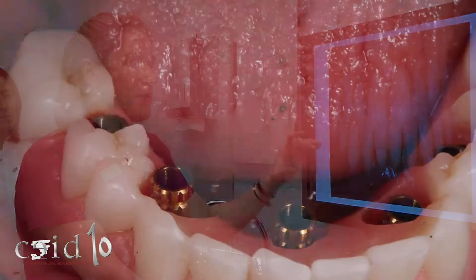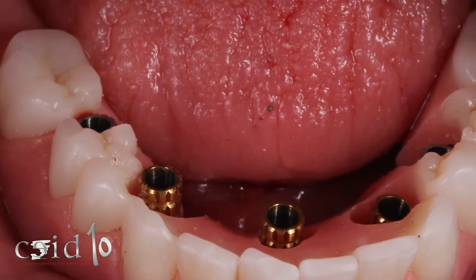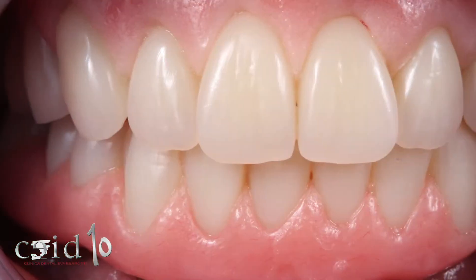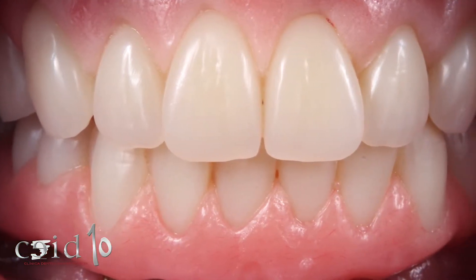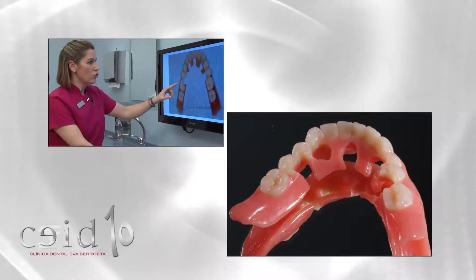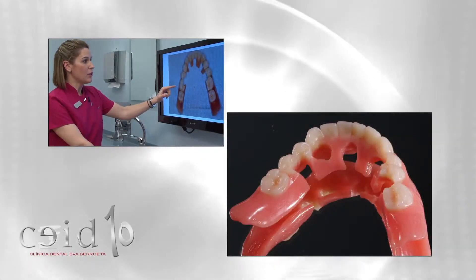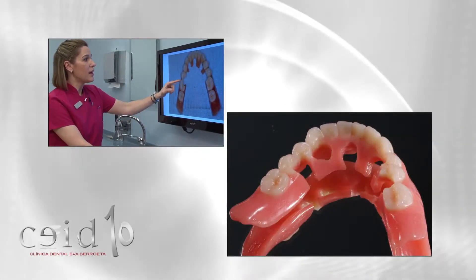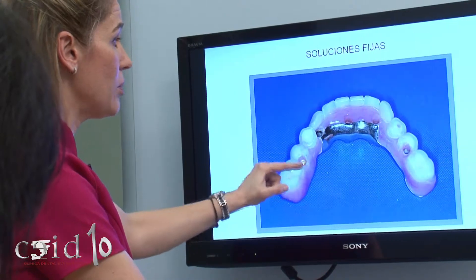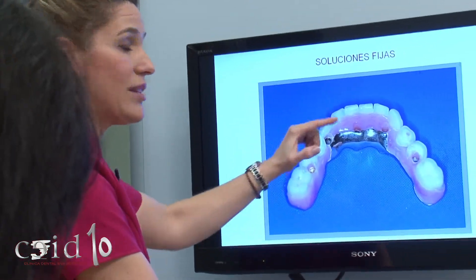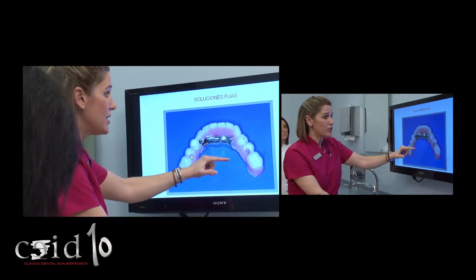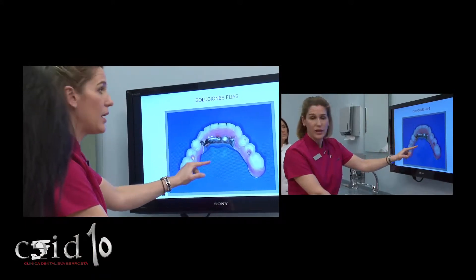Yo creo que esta es una de las técnicas que tenemos más desarrolladas, con una alta predictibilidad, y podemos tener la extracción de los dientes, los implantes y los dientes el mismo día de la cirugía. Este es uno de los tratamientos realizados — la dentadura es adaptada haciendo espacio a los implantes. Este es el resultado de lo que se llama una prótesis híbrida. Este es el resultado final.